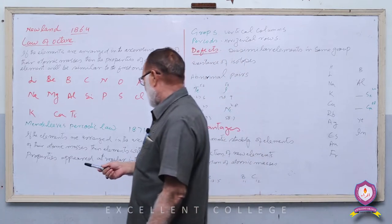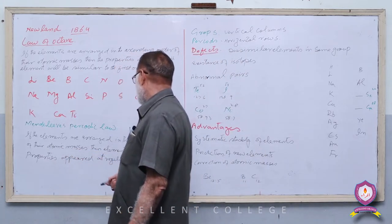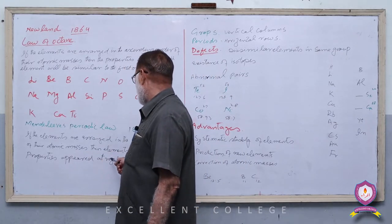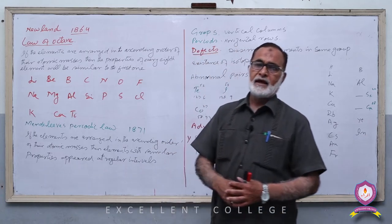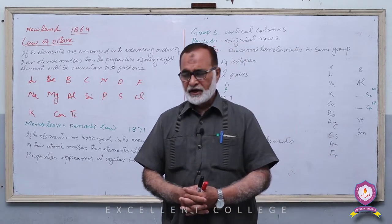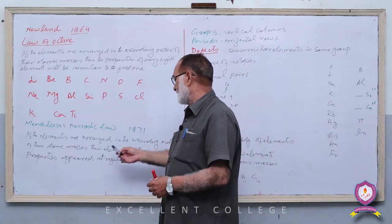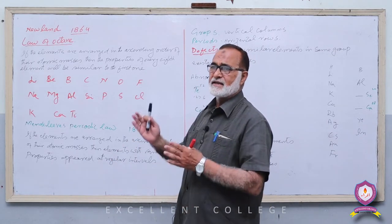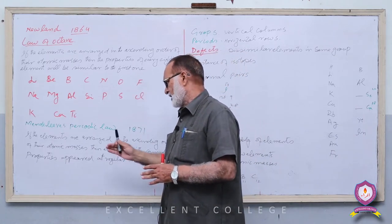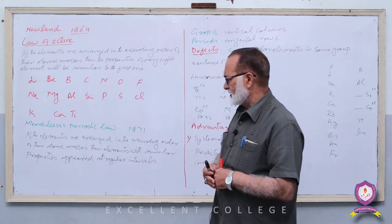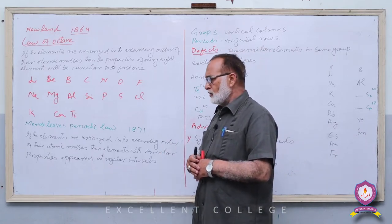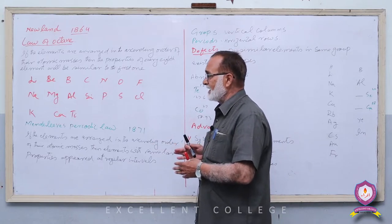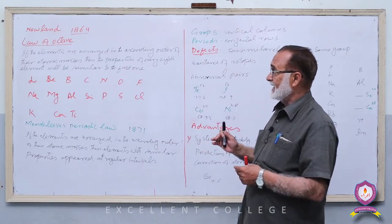Mendeleev's Periodic Law: If the elements are arranged in the ascending order of their atomic masses, then elements with similar properties appear at regular intervals۔ یعنی بڑھتے ہوئے atomic mass کی بنیاد پر ترتیب دینے سے elements کی properties periodically repeat ہوں گی۔